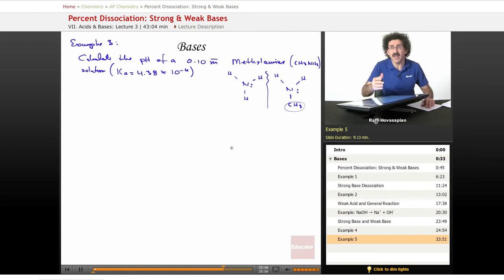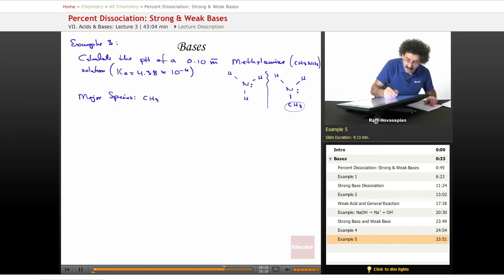It behaves exactly the same way. It's a base, pulls a hydrogen off the water to produce hydroxide. So let's write our major species. We have the CH3NH2 and we have our H2O. 4.38 times 10 to the negative 4 versus 1.0 times 10 to the negative 14. I think we can ignore the 1.0 times 10 to the negative 14 as a source of hydroxide. Most of the hydroxide in this solution is going to come from this. Weak base, but still a stronger base than that.